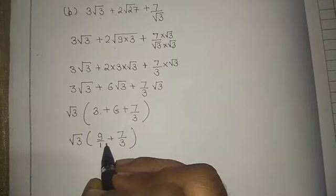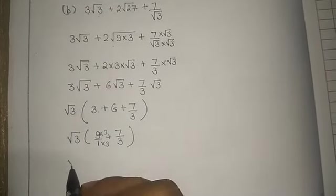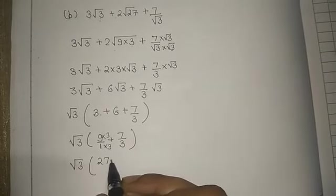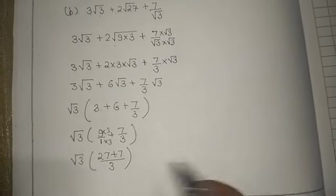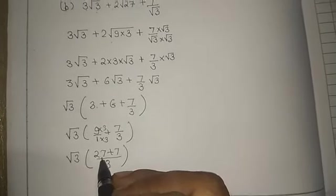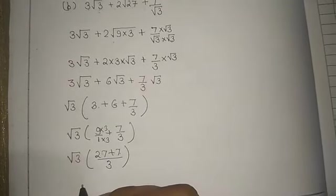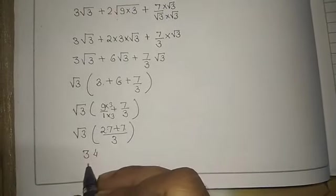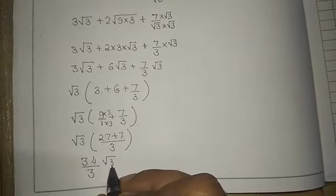Now we will make this 1 to 3, so we will multiply it by 3 and multiply it by 3. So under root 3, 9, 3 is a 27, plus 7, upon simple 3 is the LCM, so 3 is there. Now we can add 27 to 7, it will become 34. So the answer will become 34 upon 3 under root 3.